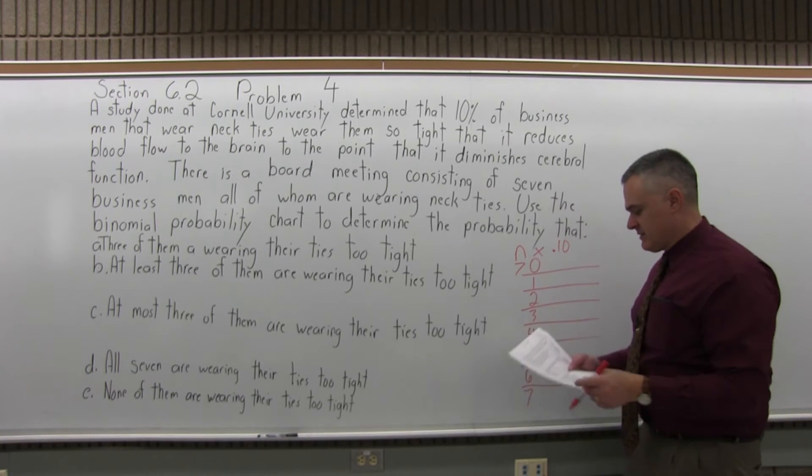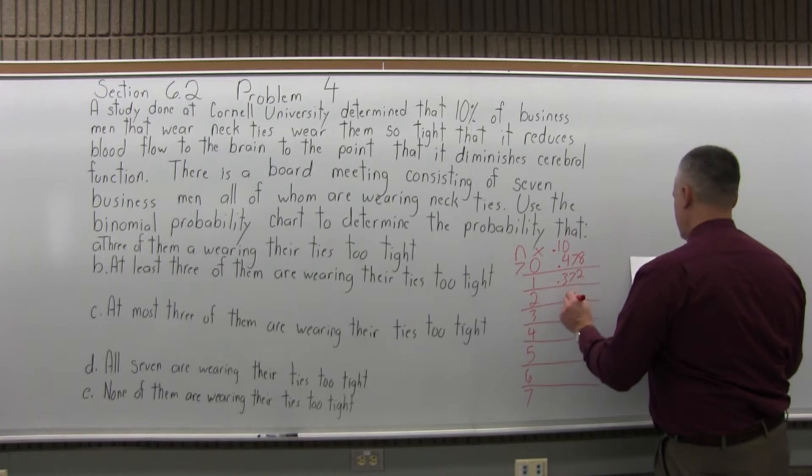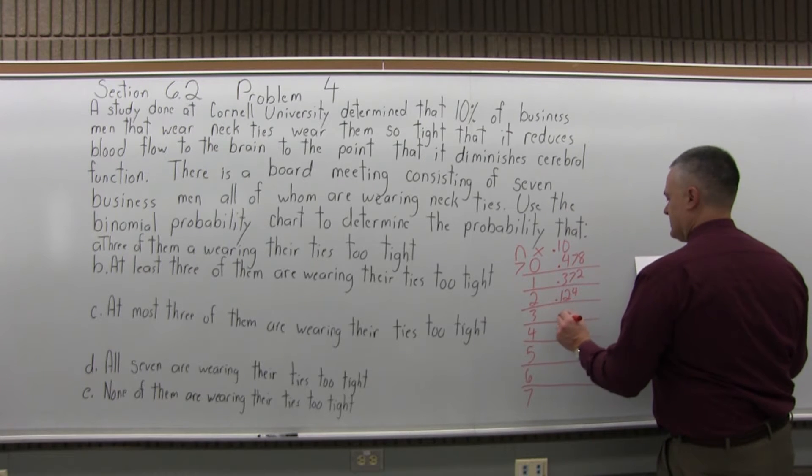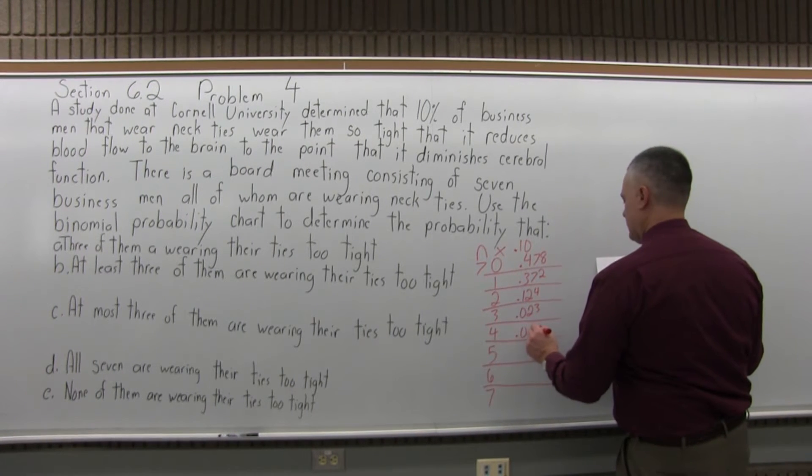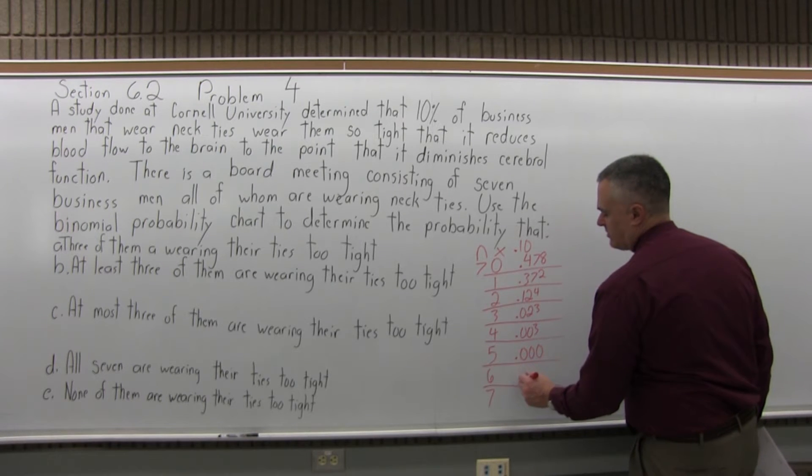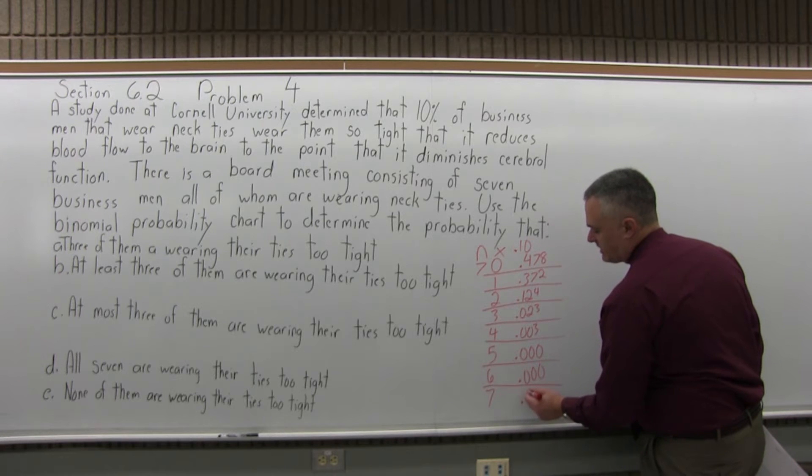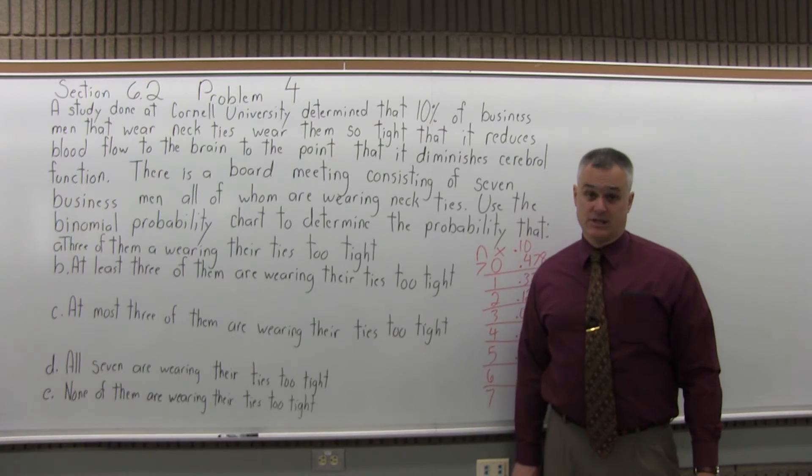I looked up this information, so next to 0 would be .478, next to 1, .372, next to 2, .124, next to 3, .023, next to 4 is .003, and the rest of them say .000. It's not really a 0% probability, the probability rounded off to three places after the decimal is zero.